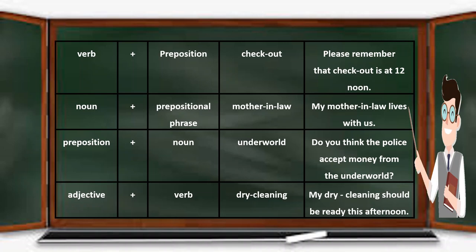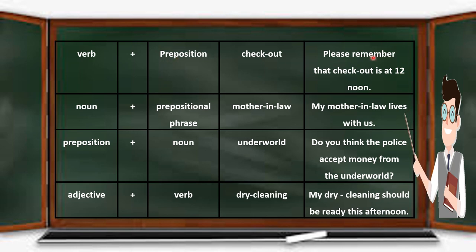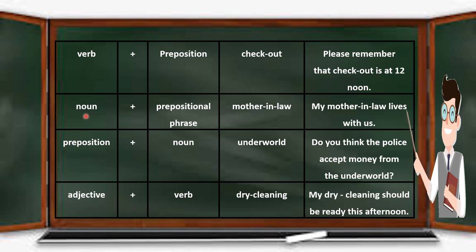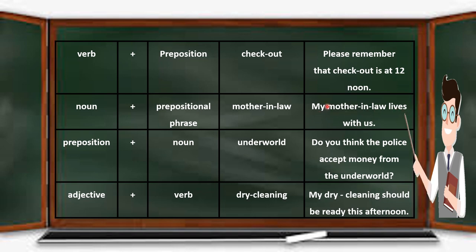The next combination is verb plus preposition: 'check-out' — with a hyphen — where 'check' is the verb and 'out' is the preposition. Example: 'Please remember the check-out is at 12 noon' — here 'check-out' is the subject. The next combination is noun plus prepositional phrase: 'mother-in-law' — three words connected with hyphens. Example: 'My mother-in-law lives with us' — 'mother-in-law' functions as the subject.